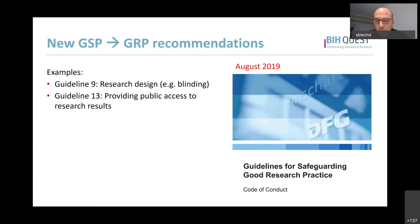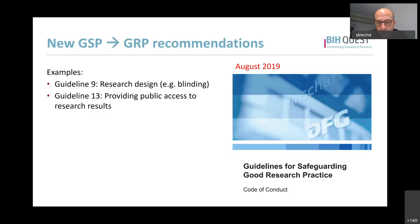Guideline 13 is likewise new. It states that if you have results from your studies, and hopefully these studies were well designed, then you should publish them and make them publicly available - at least publicly accessible. One might think this is of course clear and that one doesn't need a recommendation on this, but I will demonstrate later why this is probably useful. It also means that you can increase the usefulness of your data if you make them publicly available via open access. In formal guidelines, the issue of results publication was mentioned, but rather regarding authorship and data manipulation.